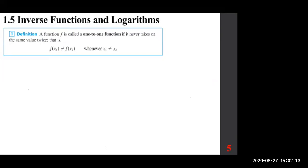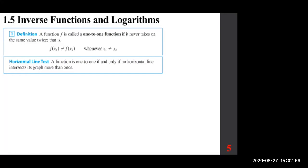We are going to look at some definitions. This is the synopsis of inverse functions. A function can have an inverse if it's one-to-one. For a function, x cannot repeat. For a one-to-one function, y cannot repeat either. A one-to-one function means if the y's are different, so are the x's. We had a vertical line test for functions; now we have a horizontal line test. A function is one-to-one if and only if no horizontal line intersects the graph more than once.